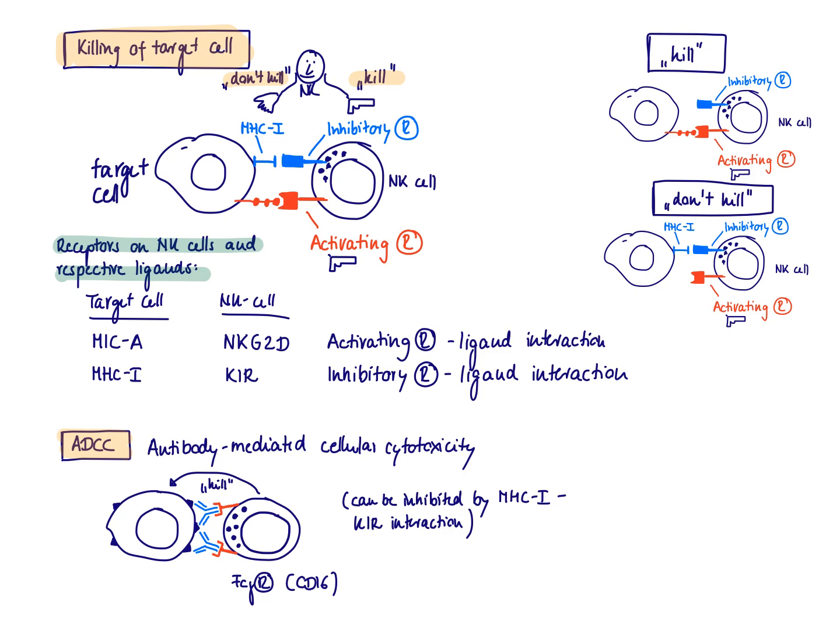So the NK cell actually focuses on cells that do not express MHC1. When does a cell not express MHC1? For example, if it has been transformed and it's a tumor cell, or if it has been infected with a virus and the virus downregulated MHC class 1.